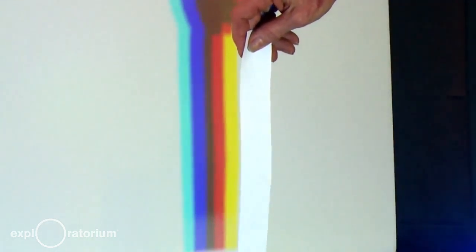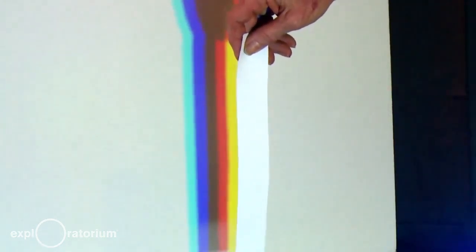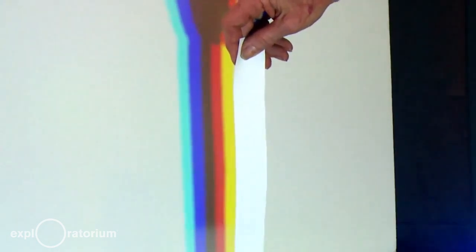But if you bring it closer to the board, I begin to see blue and red and even black shadows. Try to figure out where those colored shadows come from.